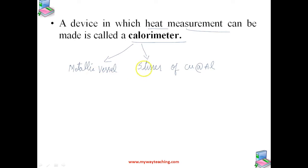The metallic vessel is kept inside a wooden jacket which contains heat insulating materials like glass wool. The outer jacket acts as a heat shield and reduces the heat loss from the inner vessel. There is an opening in the outer jacket through which a mercury thermometer can be inserted into the calorimeter to measure the heat.